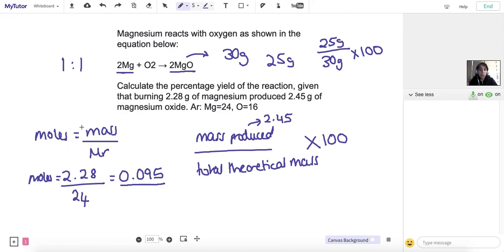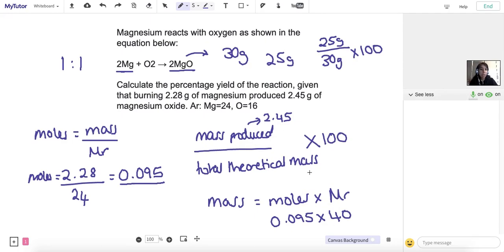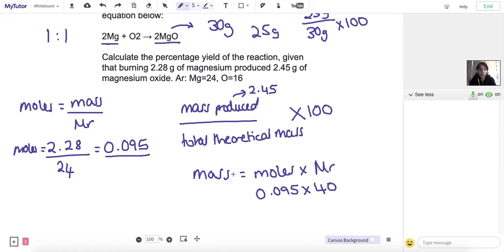We can then rearrange this equation to calculate the mass. So that will be mass equals the number of moles times the MR. The number of moles is 0.095. The MR will be Mg, which is 24, plus O, which is 16, so that's 40. If you put that into your calculator, you will get an answer of 3.8.